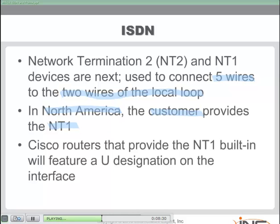Because the customer in North America provides the NT1, Cisco routers can come with the NT1 built right in. If you look at a Cisco router with a Basic Rate Interface ISDN port, it might feature a 'U' designation underneath the port. That U designation lets you see at a glance that the router has the NT1 — the Network Terminal 1 — built right into the interface.